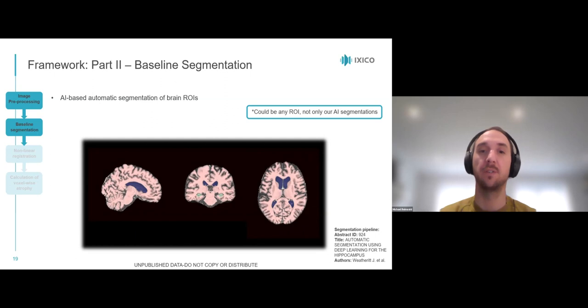And here are the segmentations from three of our AI pipelines: whole brain in red, ventricles in blue, and hippocampus in green. If you're more interested in our segmentation pipelines, feel free to contact me or check out my colleague's poster here at ADPD on specifically the hippocampus segmentation. This is abstract ID 924 and the title is automatic segmentation using deep learning for the hippocampus.